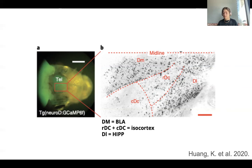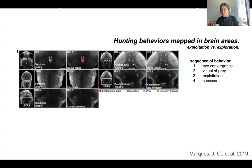Then we have the DL, that's the lateral zone of the dorsal telencephalon. Next, we are going to be looking at different brain areas that are mapped out in hunting behaviors and the different activation neurotransmitters in those behaviors.